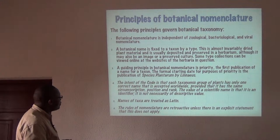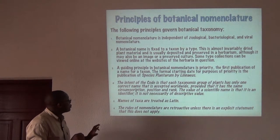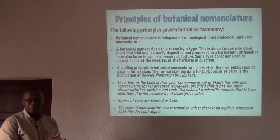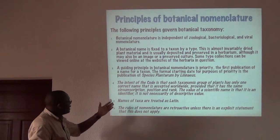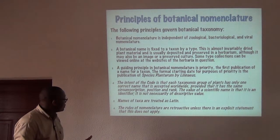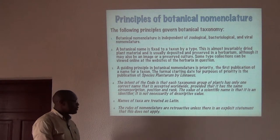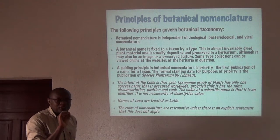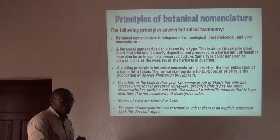The intent of the code is that each taxonomic group of plants has only one correct name. The names of taxa are treated as if they were Latin, and the rules of nomenclature are retroactive, except where specifically stated otherwise by the code.